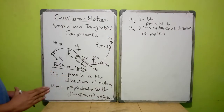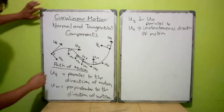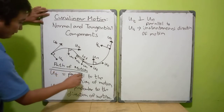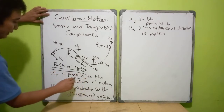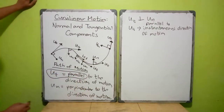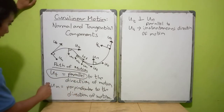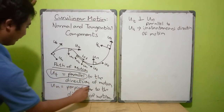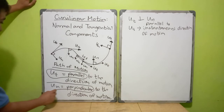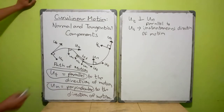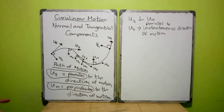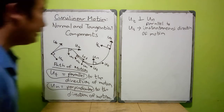Please remember these keywords: when we say ut or the tangential component, we talk about parallel to the direction of motion. When we say the normal component, it is perpendicular to the direction of motion — specifically the instantaneous direction of motion.